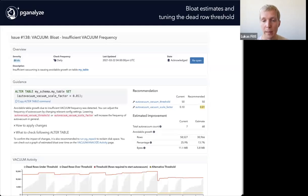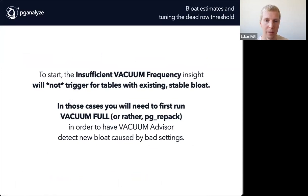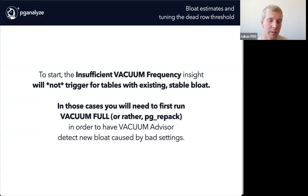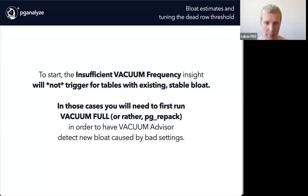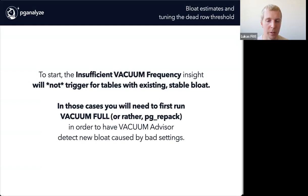One thing I'll mention: we've been a little conservative in terms of how this triggers. One feedback from Index Advisor was that we got a lot of recommendations — often overwhelming and not necessarily actionable. So for Vacuum Advisor, we've said let's start with fewer recommendations: the ones where we've really seen new bloat appear on a table, giving you a very clear and actionable recommendation to change these thresholds. If you're not seeing any recommendations but still have bloat, you might have to get the old bloat out of your table first — either with VACUUM FULL, or usually pg_repack, which you can run online.